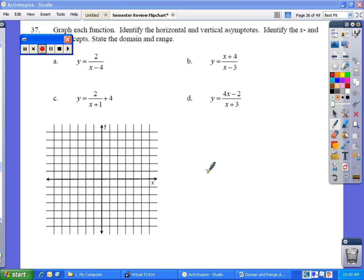Okay, part C we're going to do the same thing. Your vertical asymptote will be to set the denominator equal to zero.